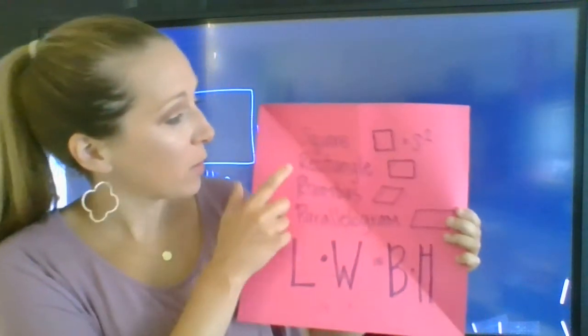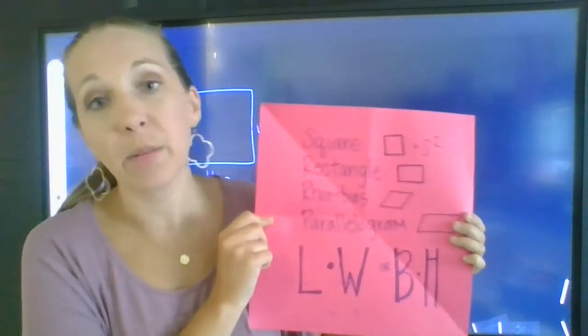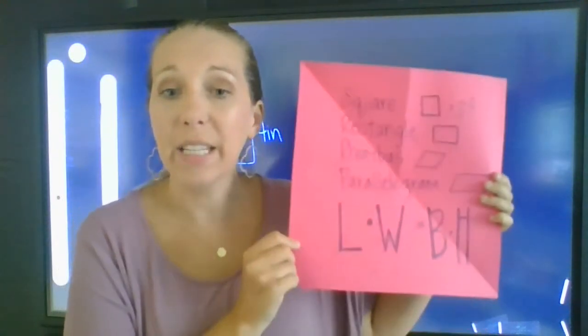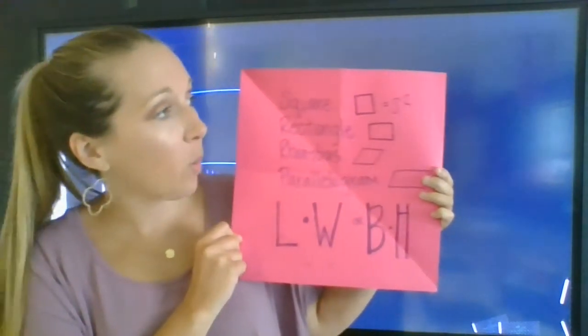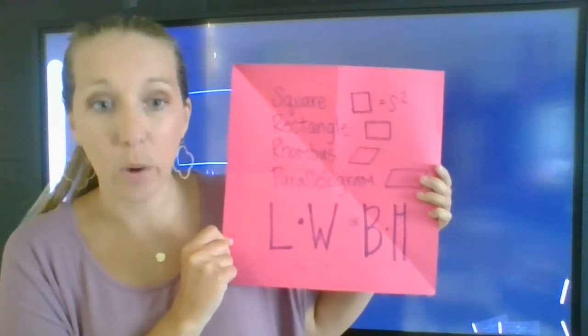So just to recap, we have square, rectangle, rhombus, and parallelograms that use the exact same formula – length times width or base times height. Either one is fine, but with a square you can add an extra formula that is S squared.